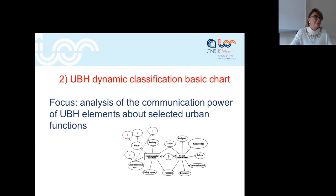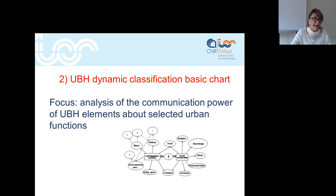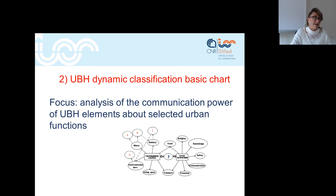The second step was the definition of a dynamic classification basic chart. The focus of this chart is the analysis of the communication power of UBH regarding selected urban functions. As you can see in the chart, at the center we can have a single system of elements, a single element, or also a country. The 11 functions are divided into two groups.